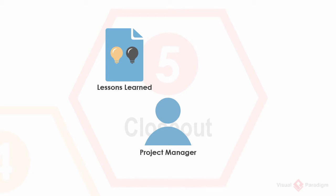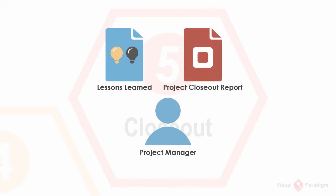Another document to develop is the project closeout report, which consists of studies of variances between the actual and baseline performance goals, project cost, and schedule. It also includes a description of the ongoing operation and maintenance plan.